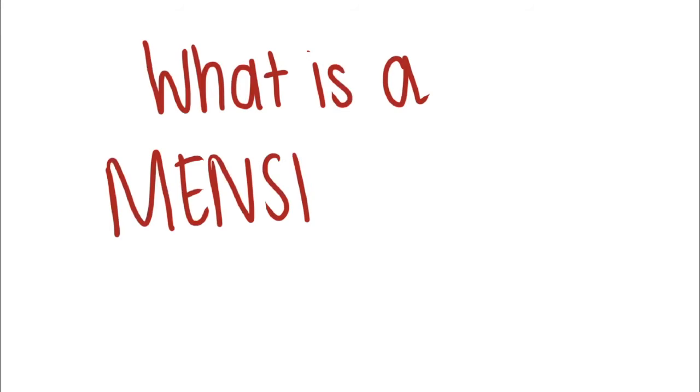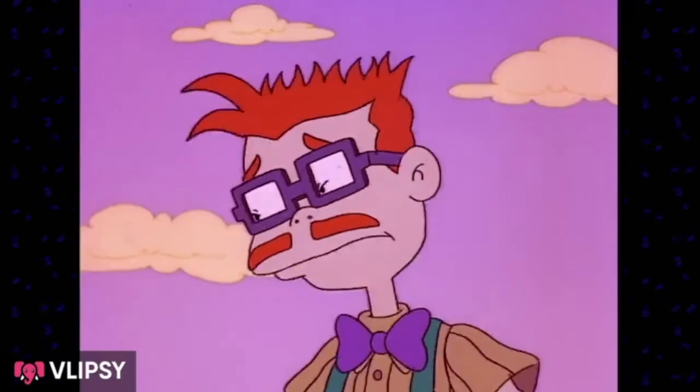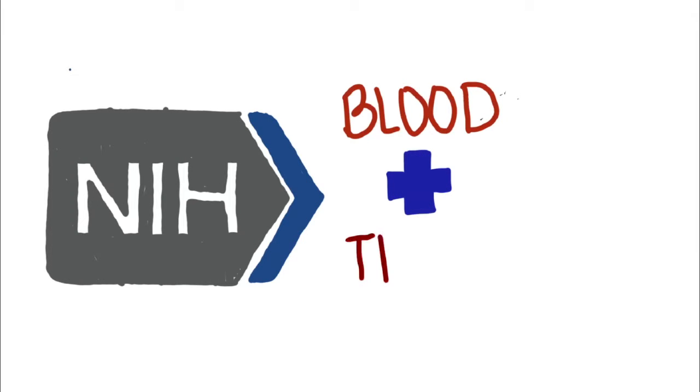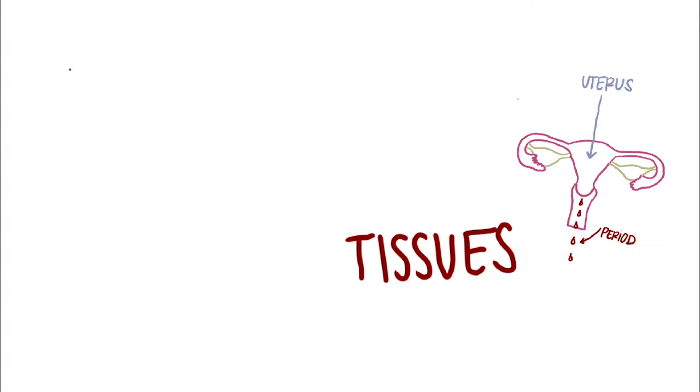Hey everyone, today I wanted to go over what a menstrual period is. According to the National Institute of Health, a menstrual period is when blood and tissue from the uterus are released from the body.